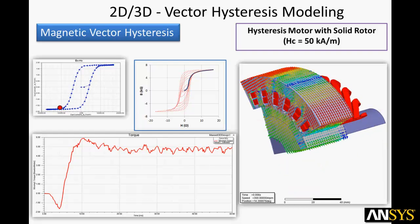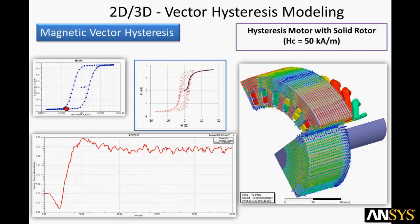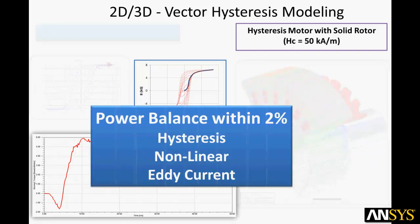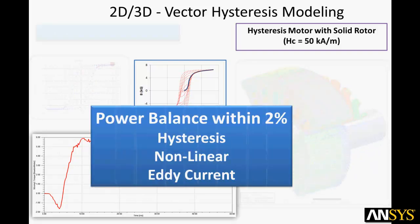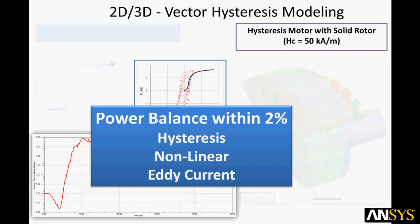Accurate prediction of motor efficiency also requires nonlinear modeling and eddy effects. A measure of accuracy is the power balance between electrical input power and the mechanical output power including various losses.